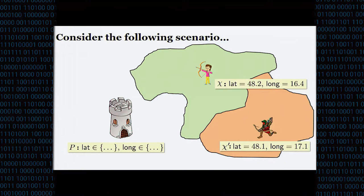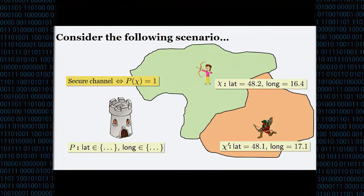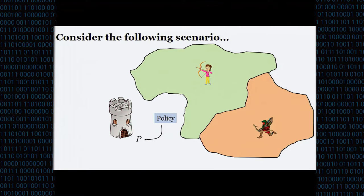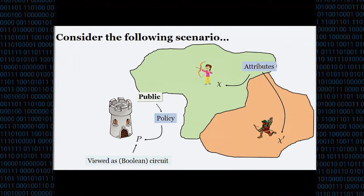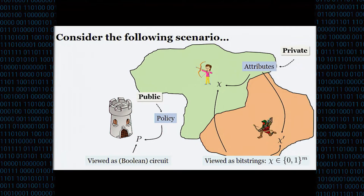These two agents will also have an attribute vector specifying their latitude and longitude. We want the base to establish a secure channel with one of these agents if the policy is satisfied by these attributes. So abstracting out a bit, the base will have some policy P, the agents will have an attribute vector χ. This policy is public and we'll view it as a Boolean circuit, and these attributes will be private and we can view them as bit strings.